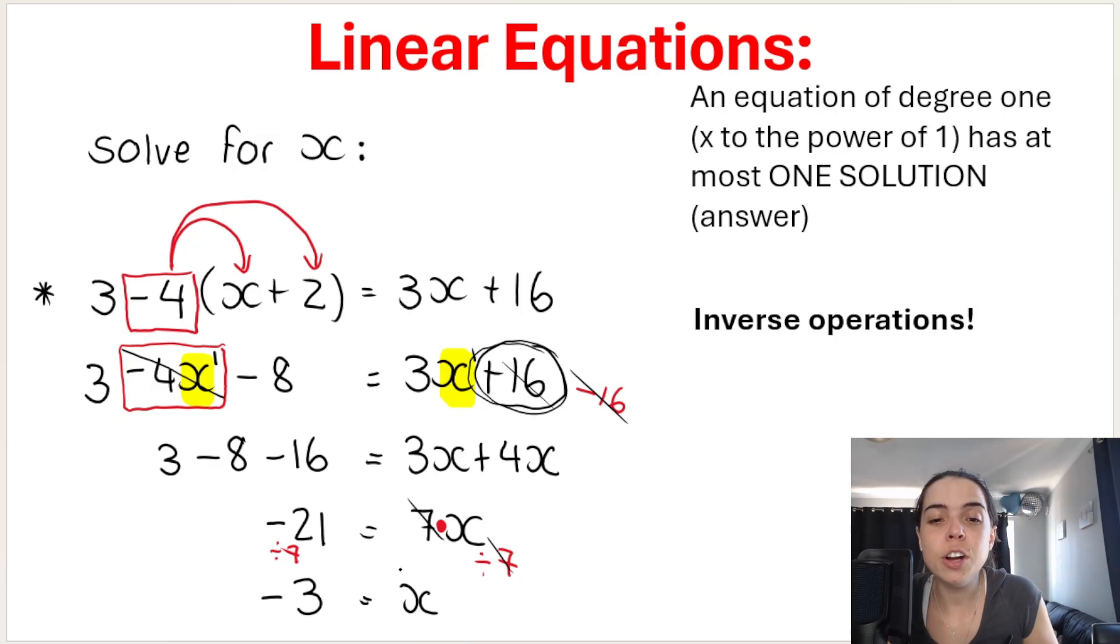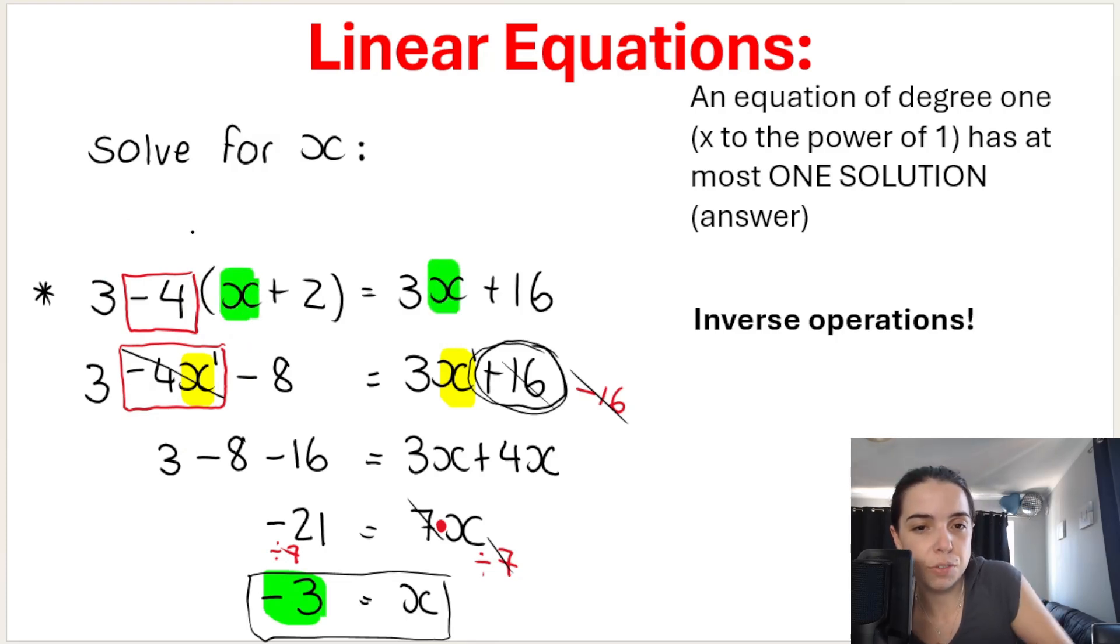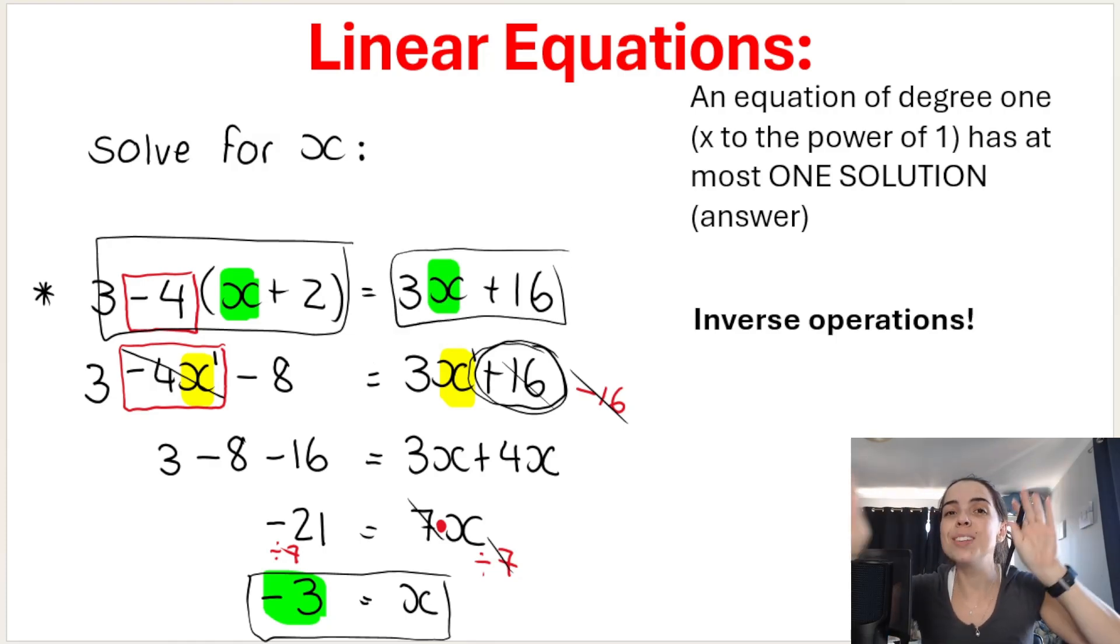Now take note of what I said earlier. Only one solution, only one answer. And you can always check to see if you've done your equation correctly. Take your answer, which is negative 3, and in the place of x on both sides, substitute negative 3. Work out the left-hand side, see what you get. Work out the right-hand side, see what you get. If you get the same answer on both sides, you've done your equation correctly.